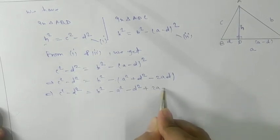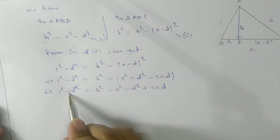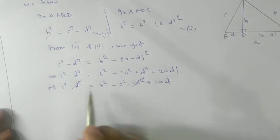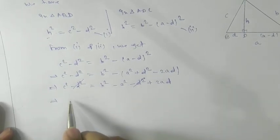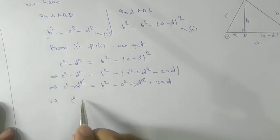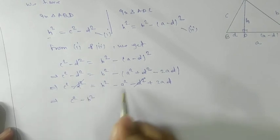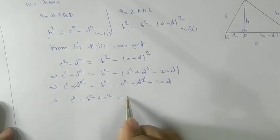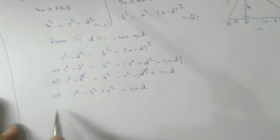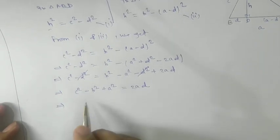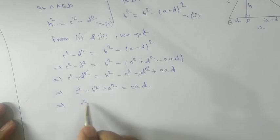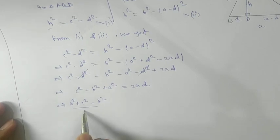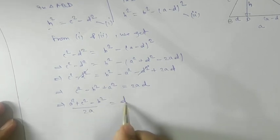The D² terms cancel each other. Rearranging and bringing terms across: C² + A² − B² = 2AD. Therefore D = (A² + C² − B²) / 2A.